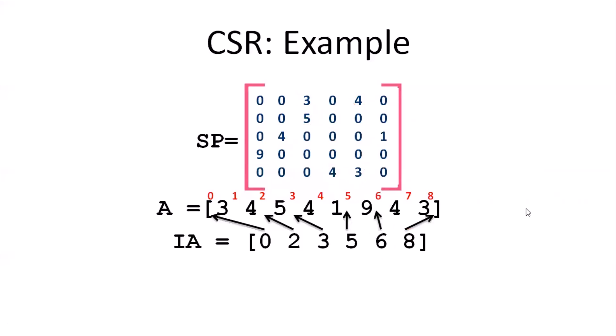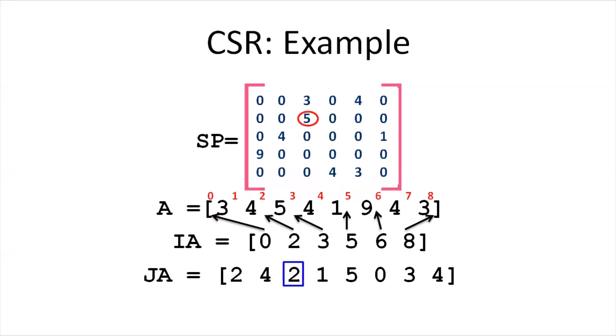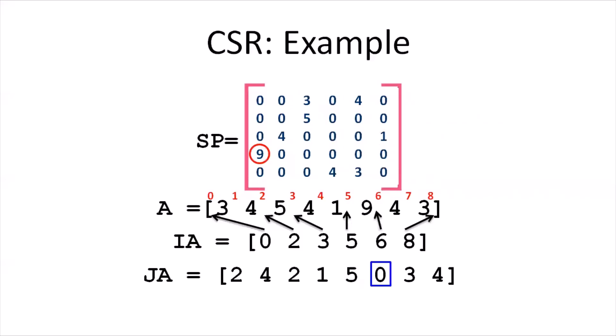Coming to the next vector JA — this is straightforward. We identify each non-zero element row-wise and record its column index. Element 3 is in column 2, so JA gets 2. Element 4 has column value 4. Element 5 has column value 2. Element 4 (row 2) has column value 1. Element 1 has column value 5. Element 9 has column value 0. Element 4 (row 4) is in column 3, so 3 is appended. And element 3 has column number 4, so 4 is appended in JA.